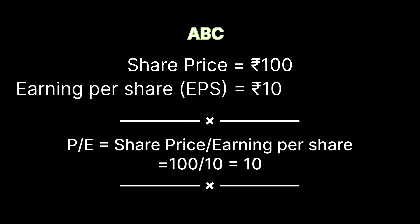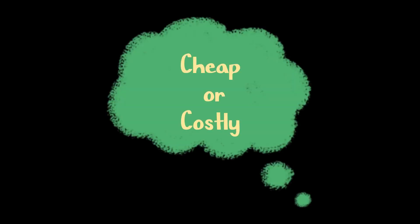Now if you are interested in buying this share, how do you know if the current share price is cheap or costly? It's like buying a fruit or vegetable — let's say you want to buy 1 kg of tomato. You go to the market and the seller says rupees 100 per kg. You instantly sense that this is costly because you know the previous or average price of tomato is about rupees 30 or 40 per kg.